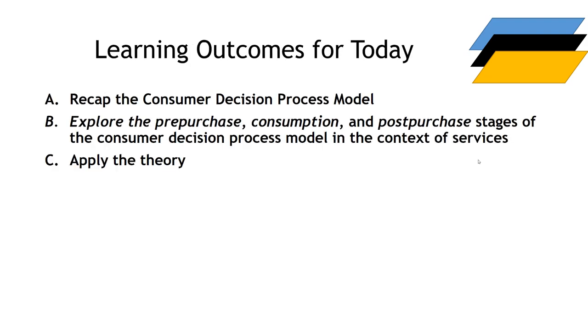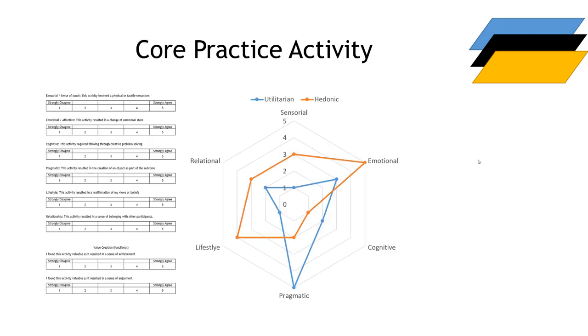Learning outcomes for this deck include a quick recap of the consumer decision process model, separation of pre-purchase, consumption, and post-purchase as three stages we need to examine, and a little application of the theory. This is a very rough adaptation of one of the provided readings on the concept of value.